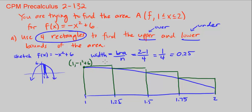This point here is 1.25, comma, negative 1.25 squared plus 6. This point is 1.5, comma, negative 1.5 squared plus 6. And finally, 1.75, comma, negative 1.75 squared plus 6. And this is why we're putting all the y values as negative of x squared plus 6.